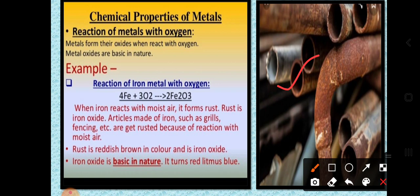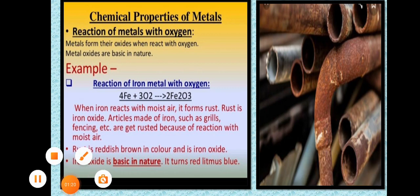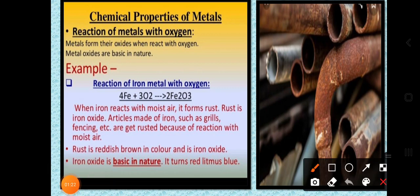This is the reaction of iron metal with oxygen. When iron reacts with moist air it forms rust. This brown color you can see is formed when iron reacts with water in moist air and forms rust. This rust is nothing but iron oxide, and articles made of iron such as grills and fencing get rusted because of reaction with moist air.